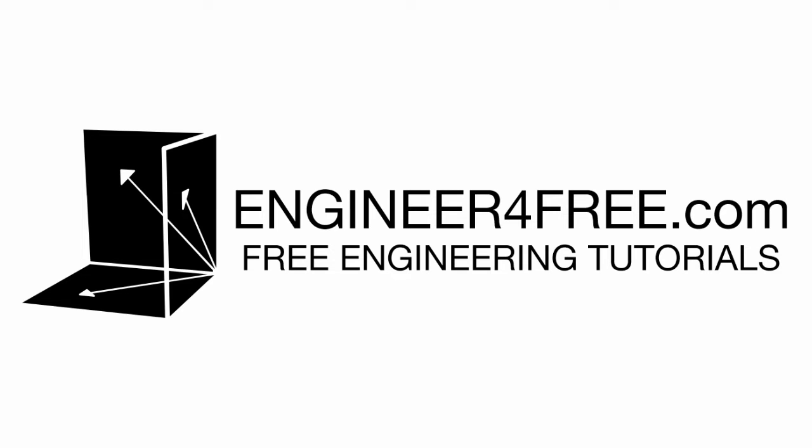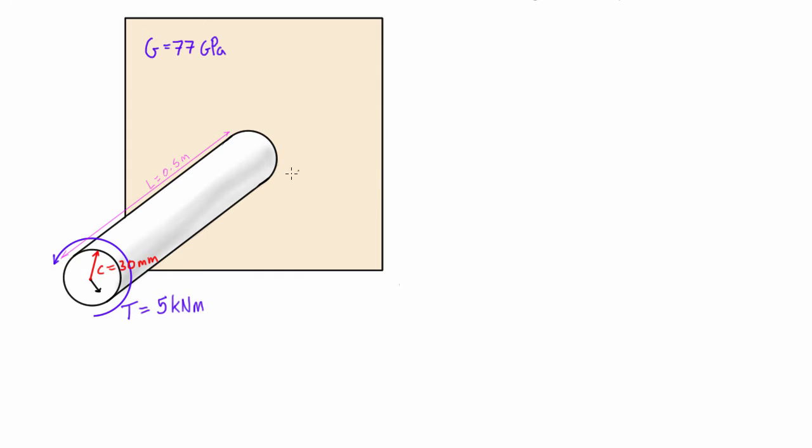Hey guys, welcome back. In this video we want to calculate the elastic strain energy for a member in torsion. Now just the same as the other energy methods videos that I've done, when we're talking about strain energy we call that capital U, but if we divide that by the volume of the entire member then we get lowercase u which we call strain energy density.